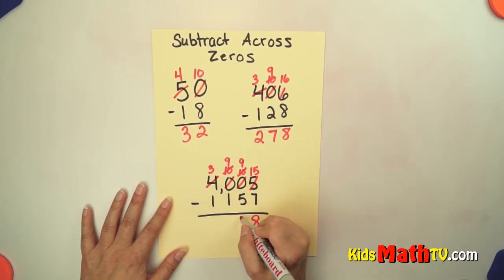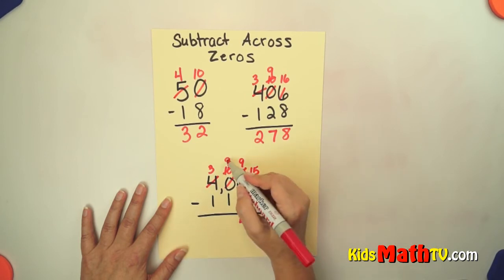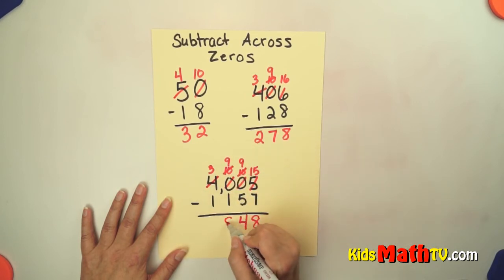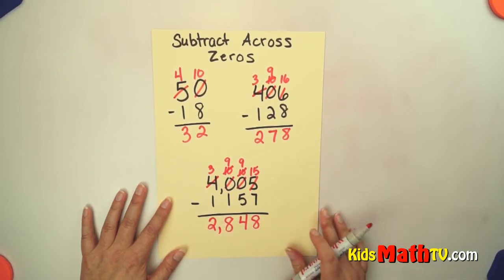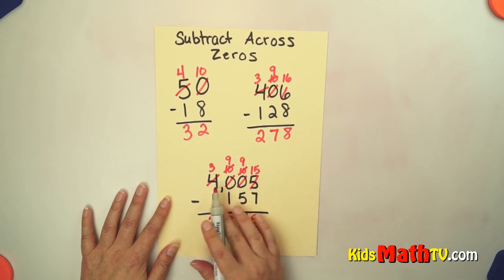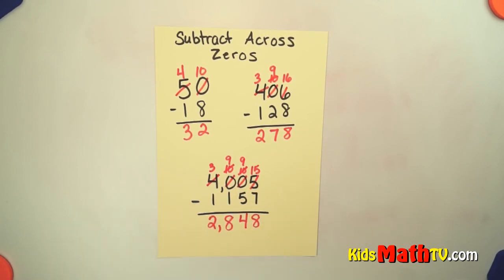9 subtract 5 is 4. 9 subtract 1 is 8. And 3 subtract 1 is 2. We get an answer of 2,848. So borrowing across the zeros is a little tricky.